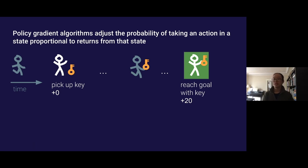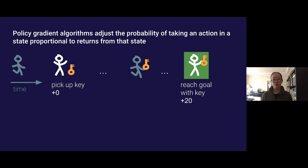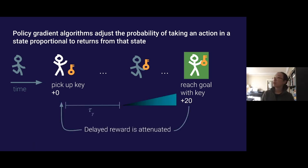Here's the example: this agent is walking through the environment and at some point can choose to pick up a key or not, but receives no immediate reward for doing so. The agent continues interacting with the environment until the very end, reaching a green goal where — if it picked up the key — it receives 20 bonus points. The problem with standard RL is that it wants to reinforce actions based on the rewards acquired after taking that action, but the future rewards for that key-pickup state are highly attenuated, giving a very low signal and making learning very slow.